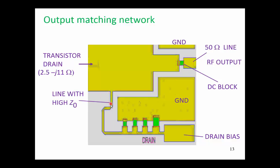Now down here, we have a line with a high characteristic impedance. The thing that is missing from this output matching network that we saw in the input matching network, was the use of a series resistance here to provide some RF isolation.